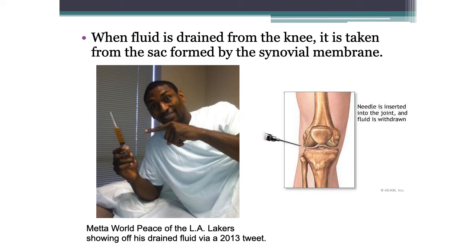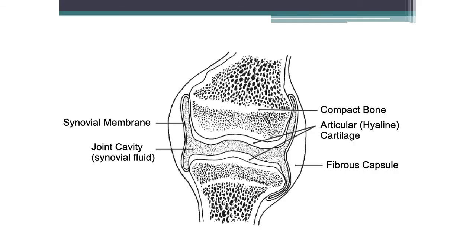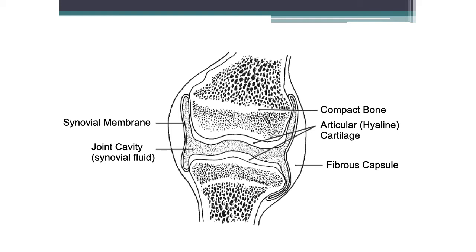Here's Metta World Peace — his given name is Ron Artest, a basketball player. After an altercation with fans, when he started to change his life, he became Metta World Peace. You can see him with the needle having all the fluid drained from his knee. This image shows the knee with the synovial fluid, the membrane, compact bone, hyaline cartilage, and fibrous capsule all coming together.